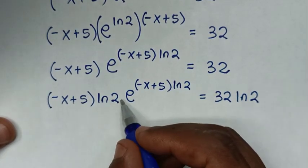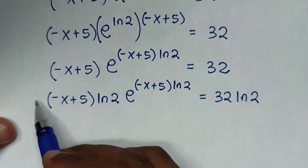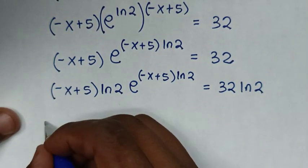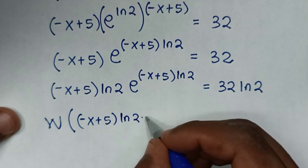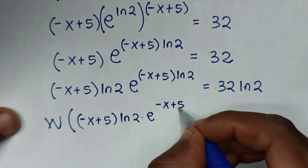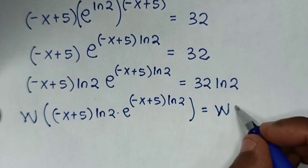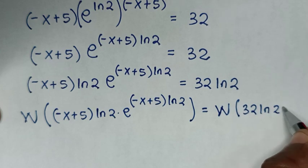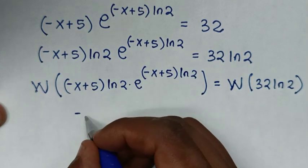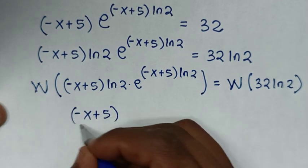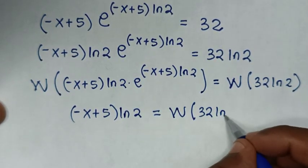Now the base and the power match the W function form. We can apply the W function to both sides: W of [(negative x plus 5)·ln2 · e^((negative x plus 5)·ln2)] equals W(32·ln2). Therefore (negative x plus 5)·ln2 equals W(32·ln2).